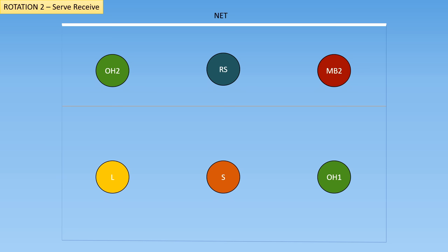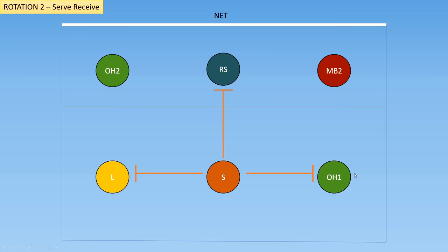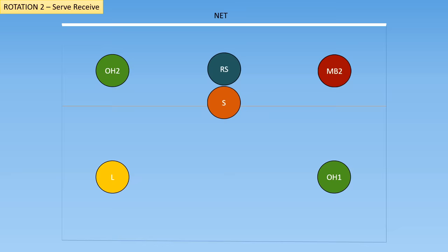Now we're in serve-receive for rotation two. This is an interesting one because the setter is in the middle and we're going to have to find a way to hide the setter away from passing. Looking at their boundaries, they cannot cross in front of the right side, to the left of the libero, or to the right of the outside hitter. So in this rotation we have the setter go all the way up to the right side, and then have all of these players scoot over to the right. The libero moves to the middle to pass, and the outside hitter drops back to pass — the outside hitter must stay in front of the libero in order to be in rotation. All of the players are still within their rules of rotation.